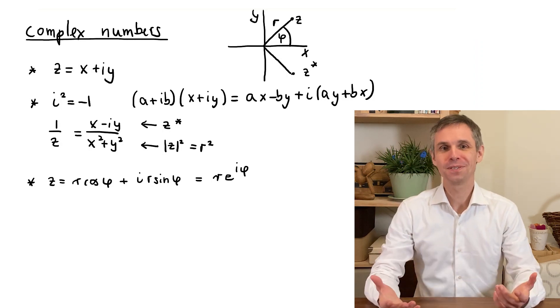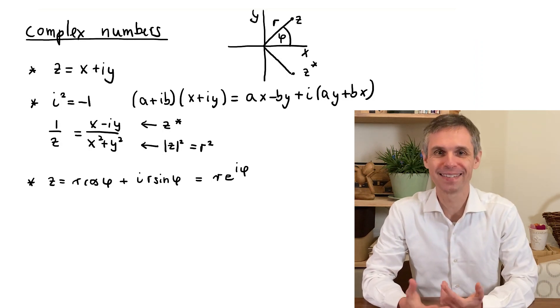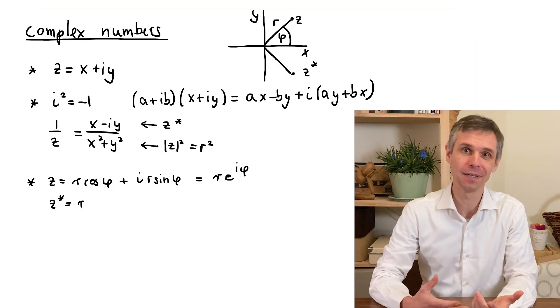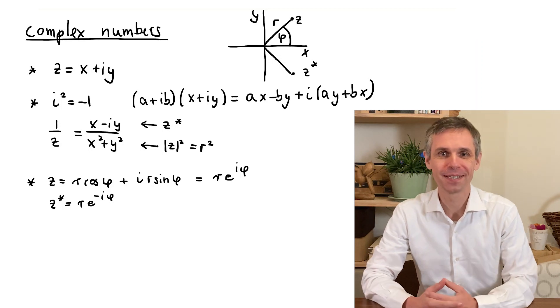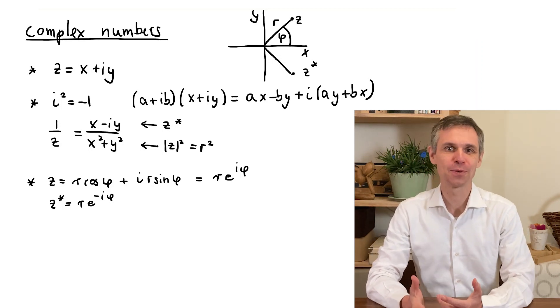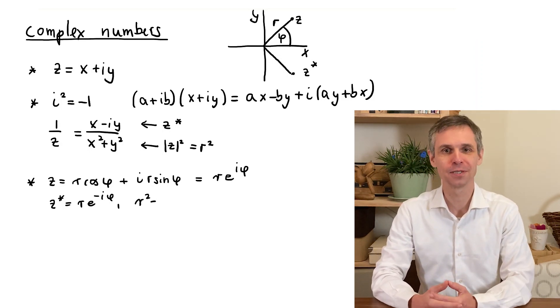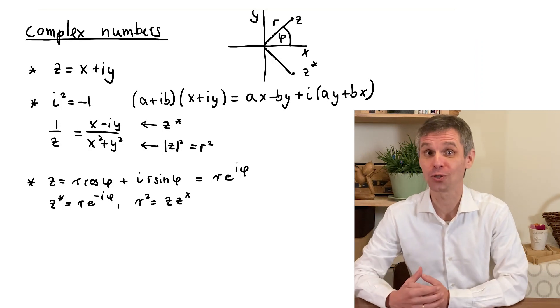For example, the complex conjugated number can again be obtained from this expression by replacing i by minus i. And using the rules of multiplication of exponentials, we see that the absolute value squared of a complex number is obtained by multiplying it by its complex conjugate.